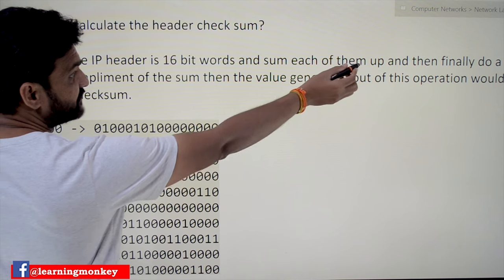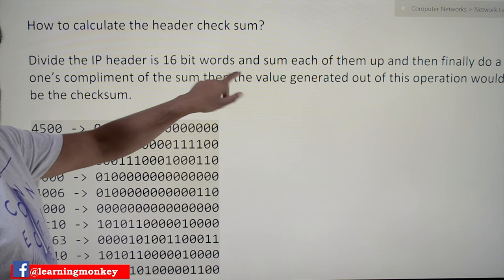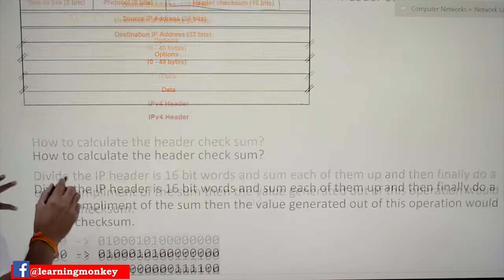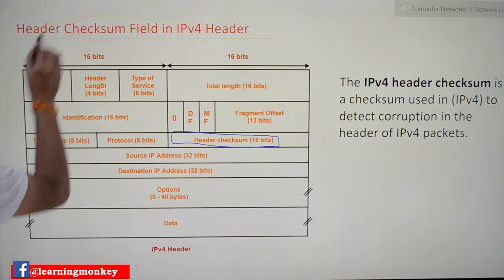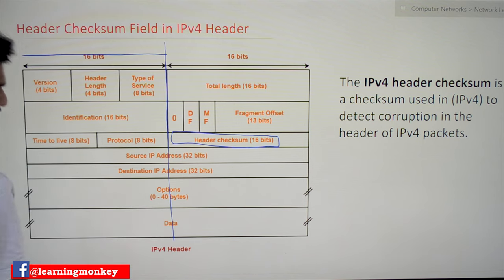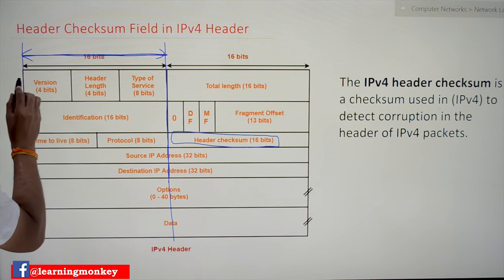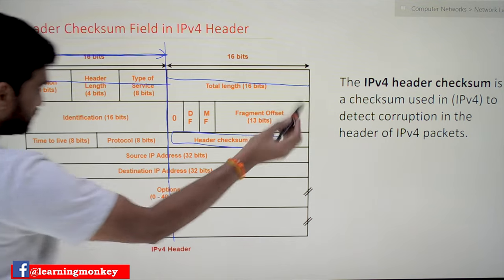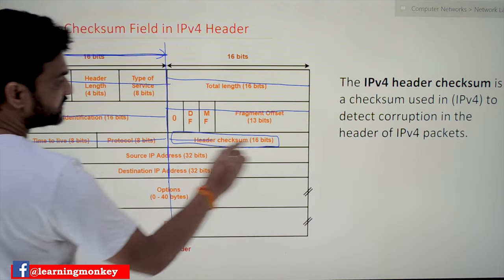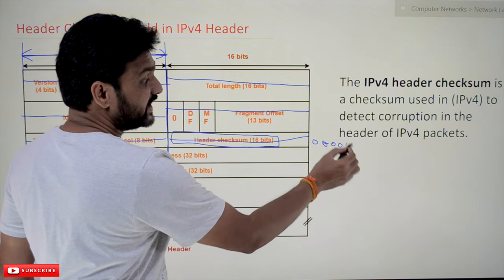Let's take our IPv4 header. Each row is 32-bit in length, so we group each 16 bits by dividing each row in half. The first 16 bits form one group, the next 16 bits form another group, and so on for each row. We repeat this for all rows of the IPv4 header.